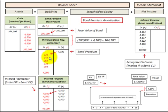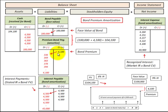Each period we amortize this premium amount down until we have a zero balance when the bond comes due. The credits of $4,100 cancel with the debits of $4,100, so at the maturity date the carrying value of that bond is $100,000.